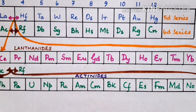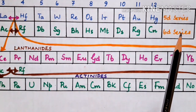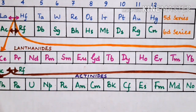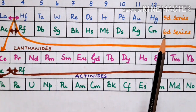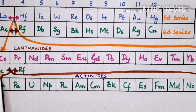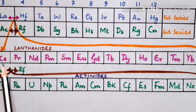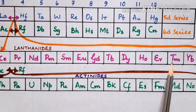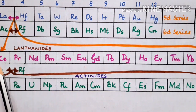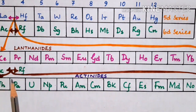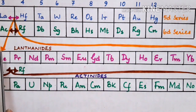What is lanthanide contraction? We know that when we move from left to right in the periodic table, the size of the atom keeps on decreasing. The steady decrease in sizes in the lanthanides as we move from left to right is known as lanthanide contraction.